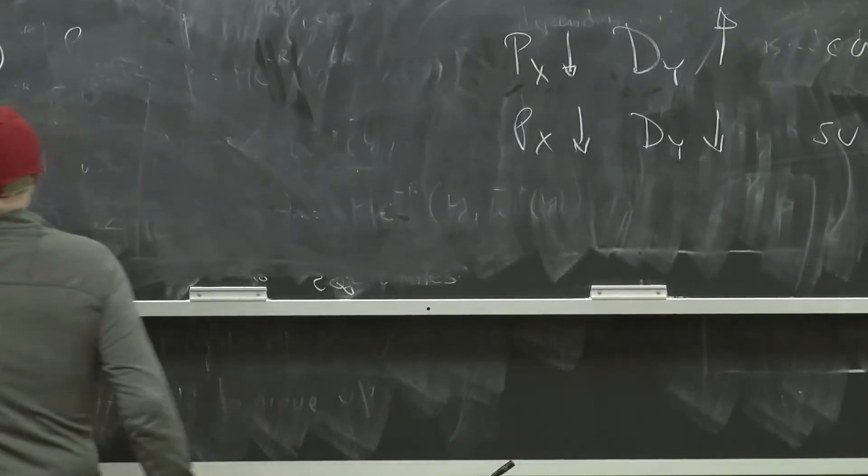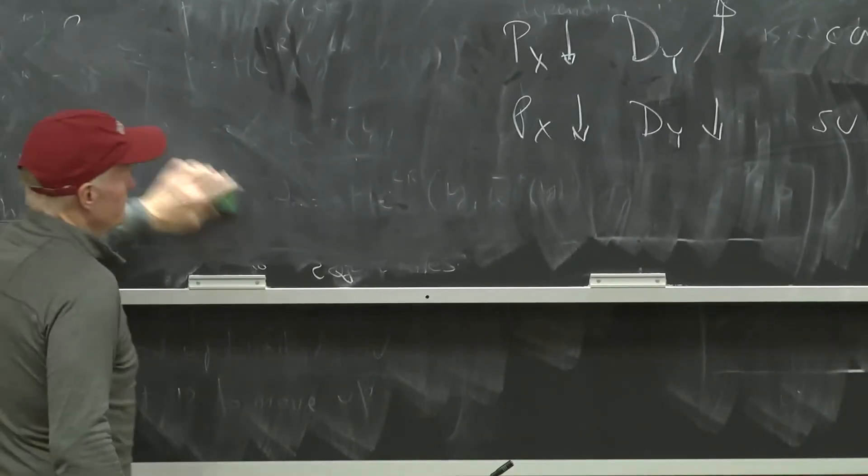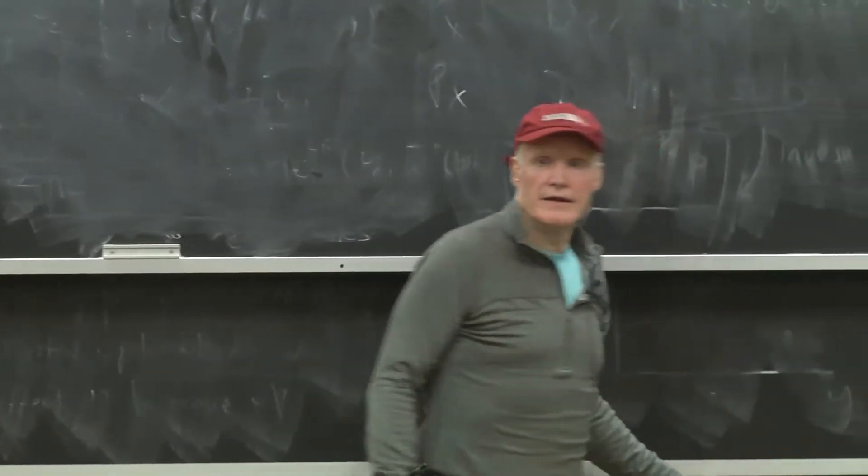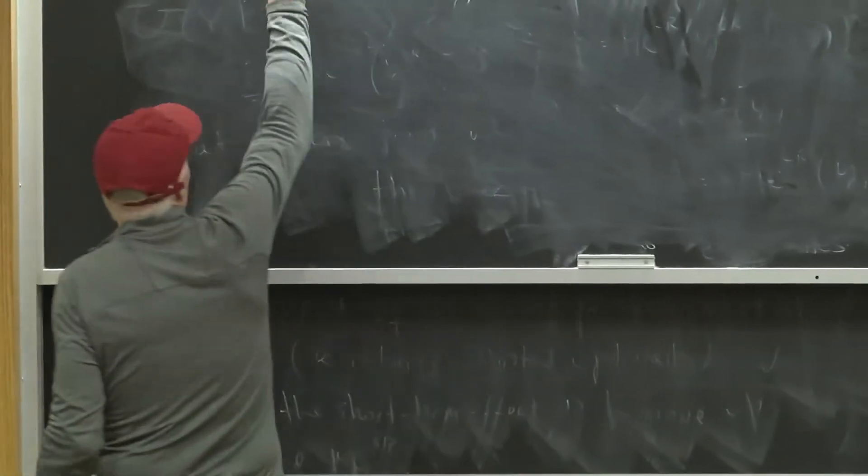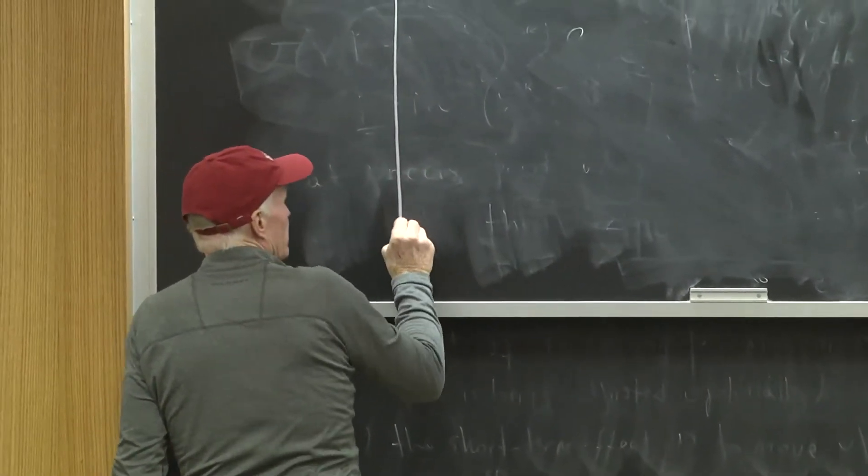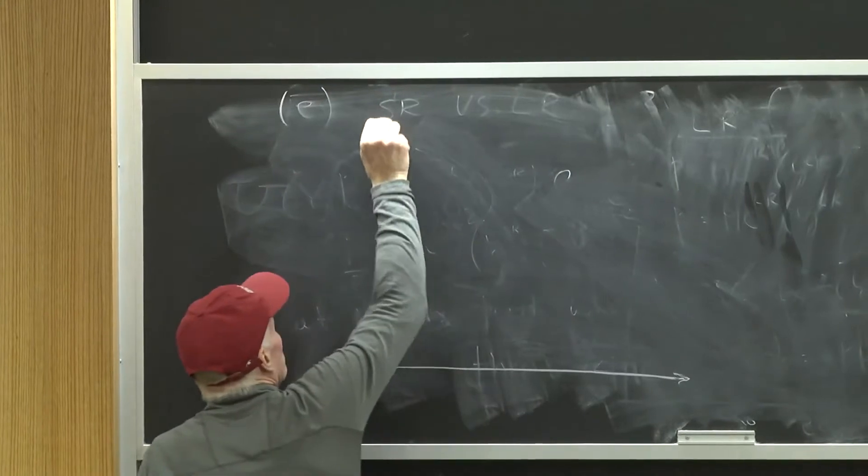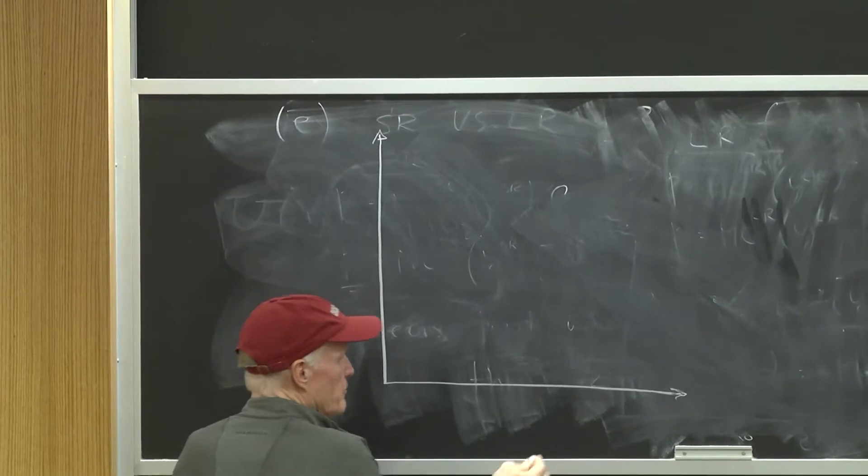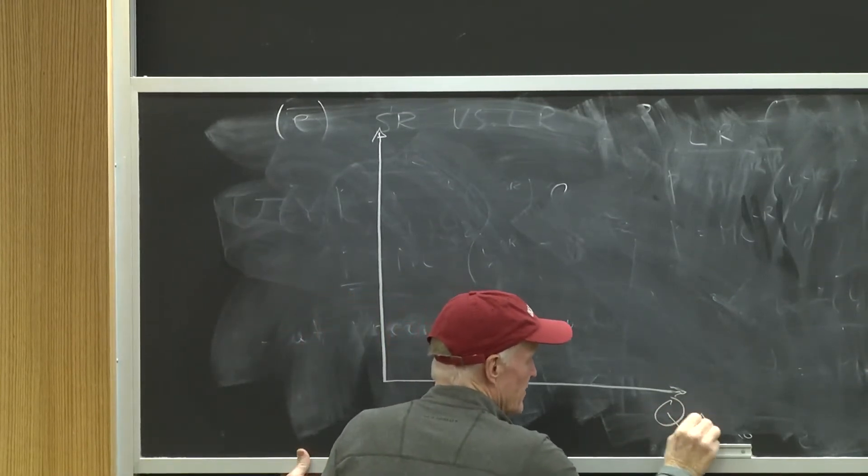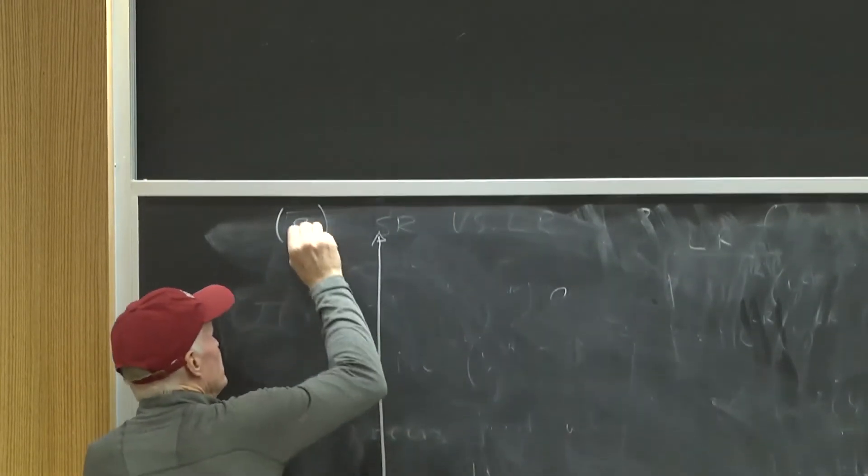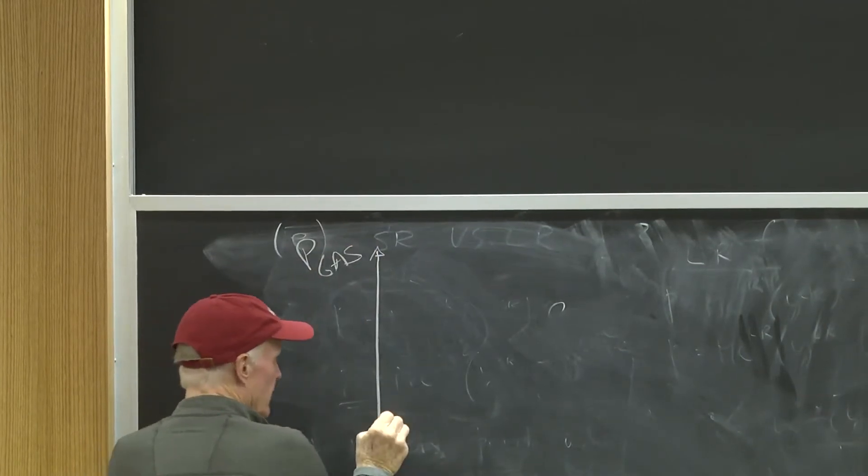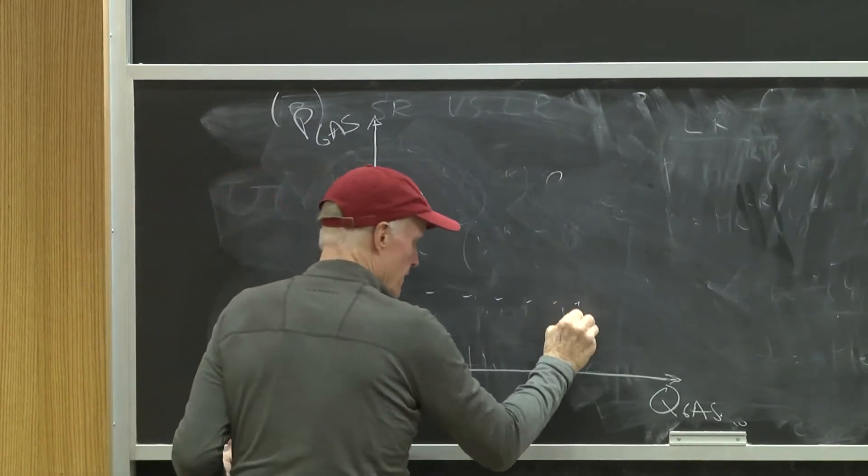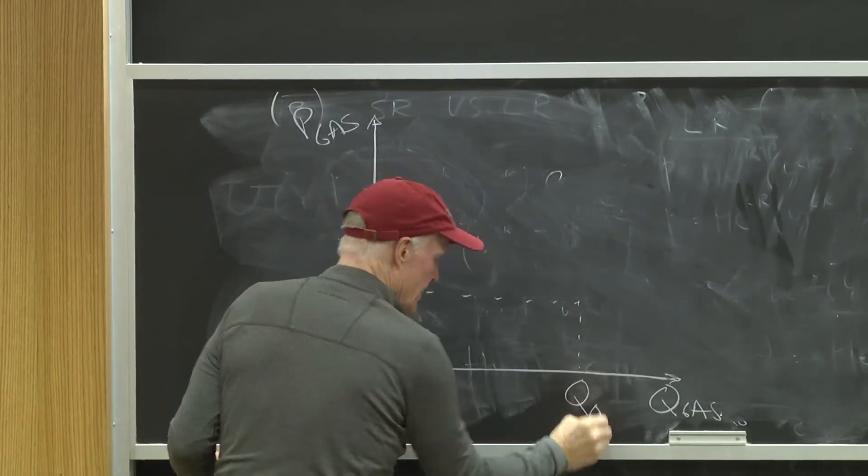And I like to illustrate it using a very simple example, which is think about something like the demand for gasoline. So again, we're going to draw a demand curve. This is going to be the quantity of gas here, and the price of gasoline is going to be here. And here's some initial price, P0, Q0. So that's my initial starting point.